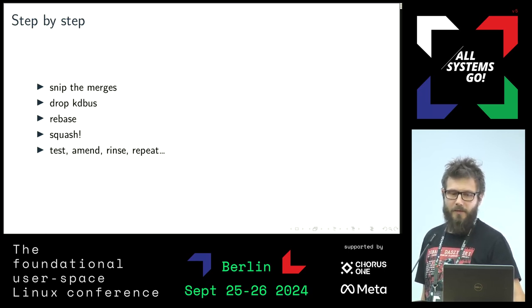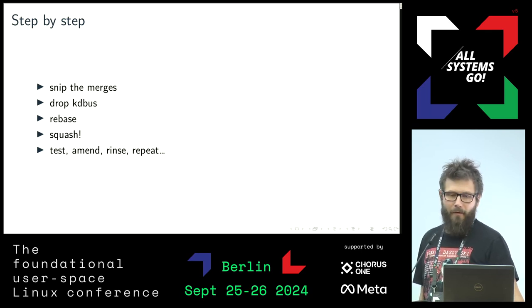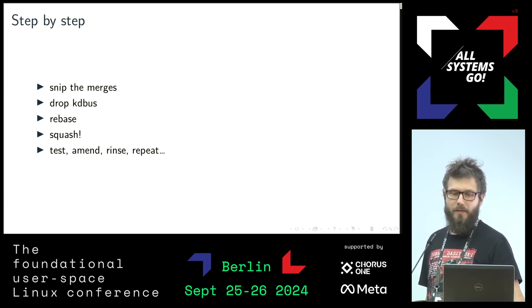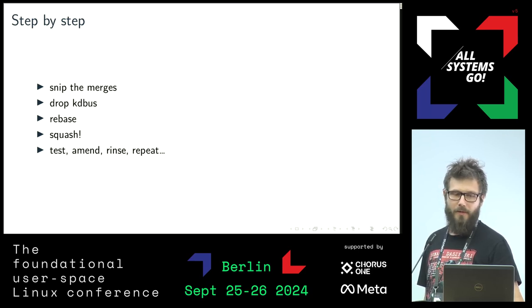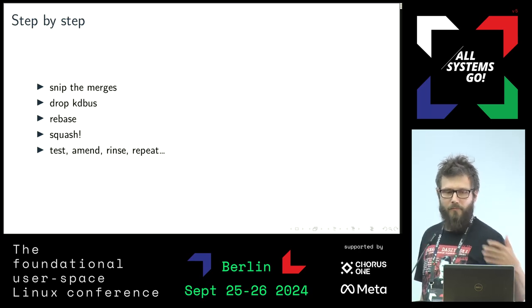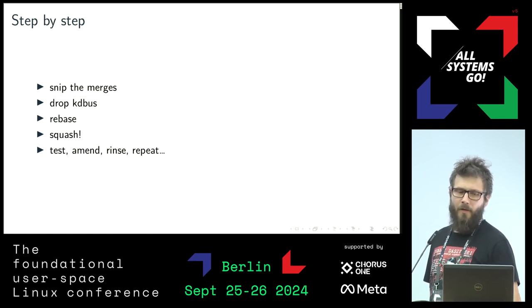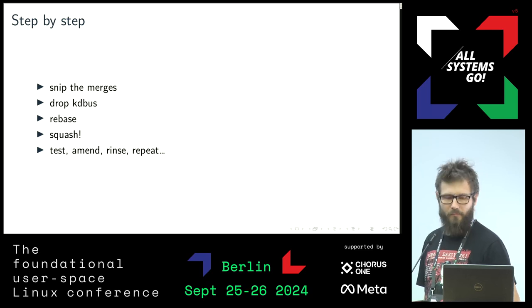We wanted to be in control of the process even if it meant more manual work. Just before rebasing we temporarily dropped KDBus — or at least as much of it as we could find. Then we rebased, and the next significant step was to find related commits along the history — for example related to our own logging system which we developed over time — and squash them together. Build, test, amend, rinse, repeat.